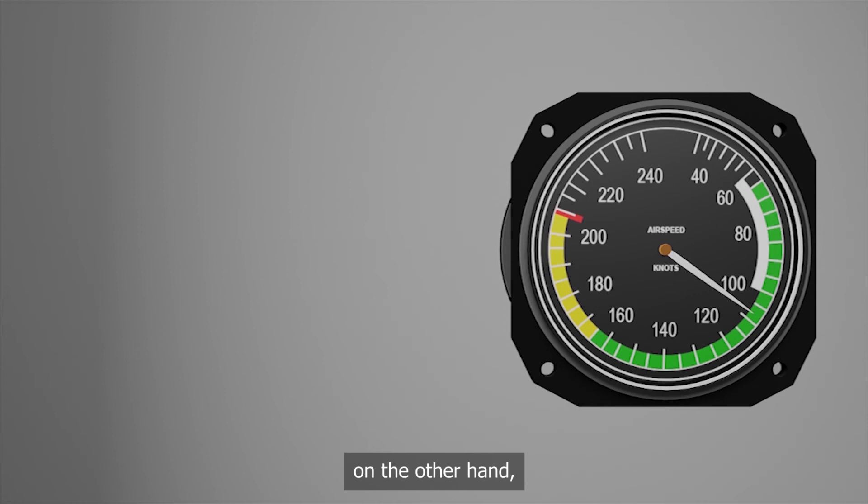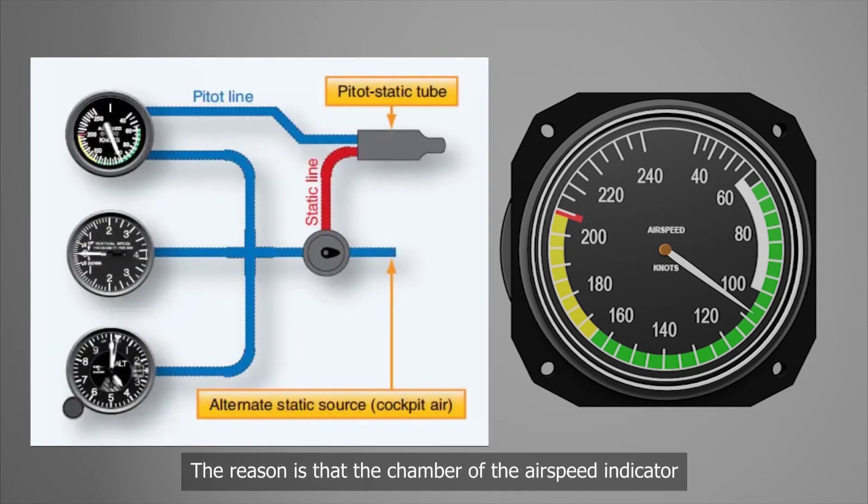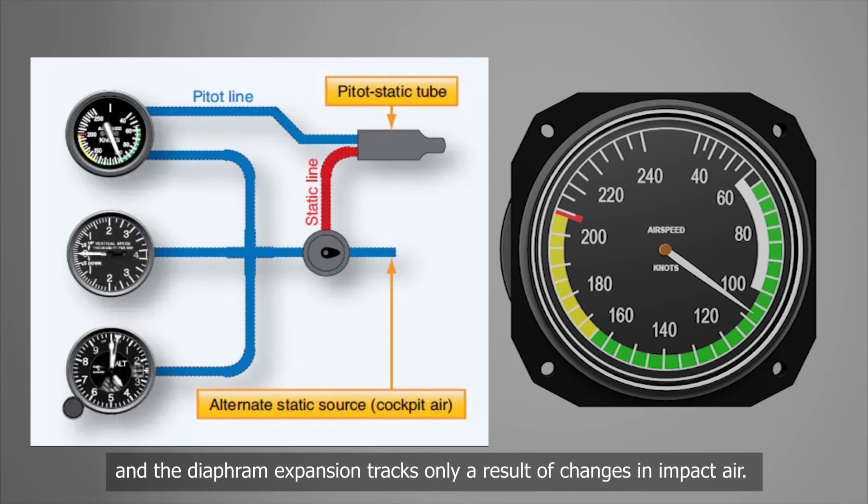On the other hand, pressure changes do not affect the airspeed indicator at all, as long as everything is working properly. The reason is that the chamber of the airspeed indicator is connected to the static port and this means that as we fly along, in this case, low pressure to high pressure, the pressure differential between the diaphragm and the airspeed chamber stays the same. And the diaphragm expansion is only a result of changes in impact air. So if the speed doesn't change, the airspeed indication remains unaltered.